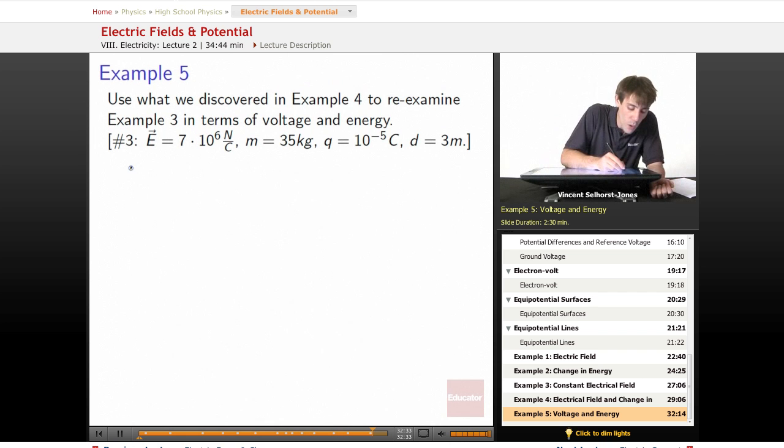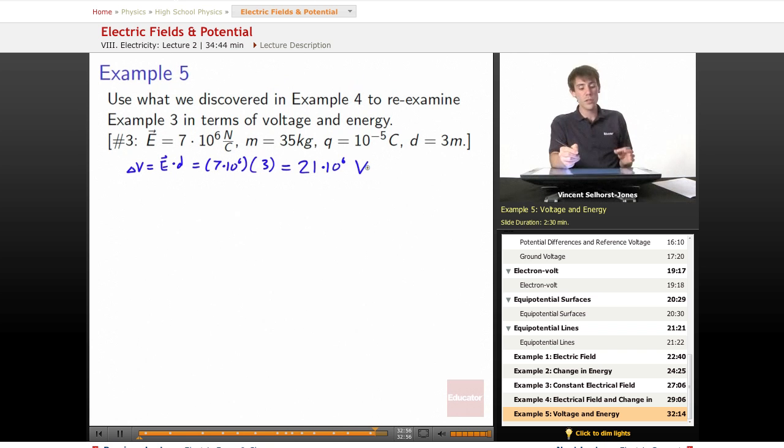Well, now we know that the change in voltage—sorry, not change, voltage is a scalar—change in the voltage is equal to the electric field dotted with the distance. Well, that means we've got 7 times 10 to the 6th times 3 meters, so we've got 21 times 10 to the 6th volts. So we've got a change in volts of 21 times 10 to the 6th.